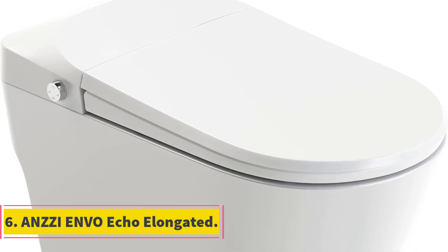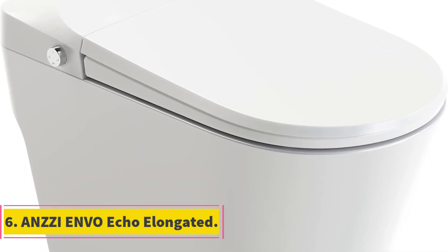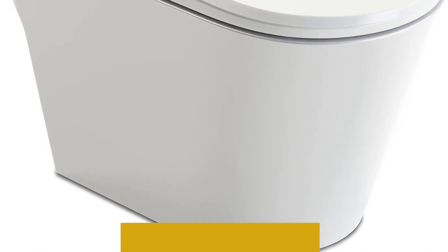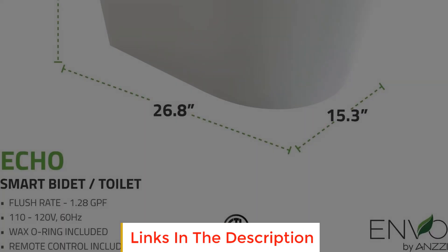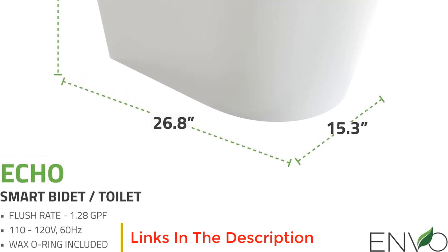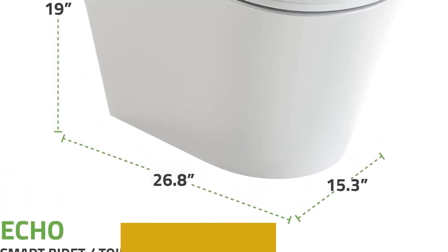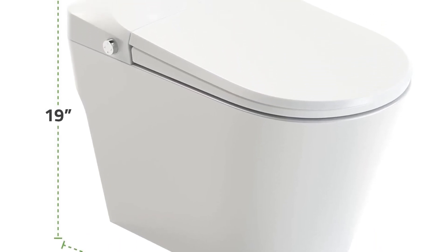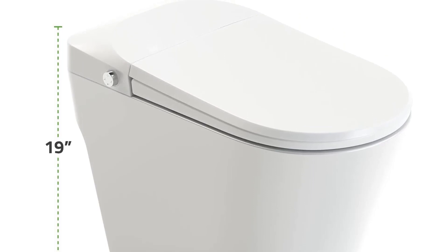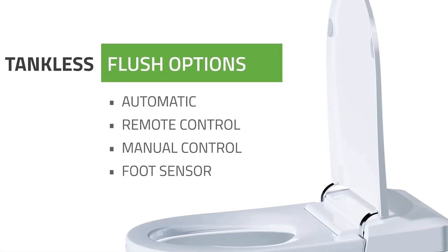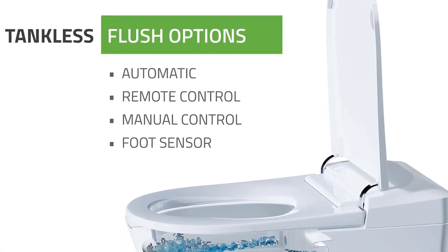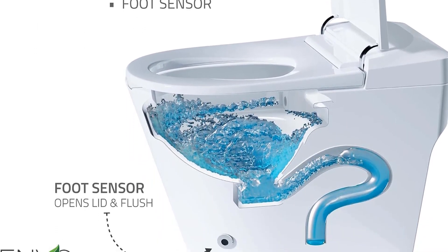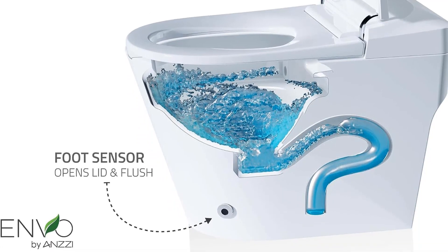Number 6. Antsi Envo Echo Elongated. The Antsi Envo Echo Elongated is an advanced and feature-rich bidet seat designed to enhance personal hygiene and comfort in the bathroom. This innovative bidet seat offers a range of functions to provide users with a thoroughly satisfying experience. One of the standout features of the Antsi Envo Echo Elongated is its 3-in-1 nozzle, which provides three different spray modes for various cleaning needs. The weak, child wash mode offers a gentle spray suitable for children,